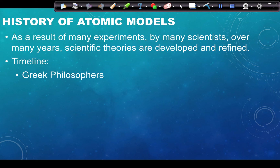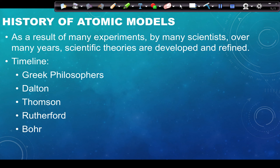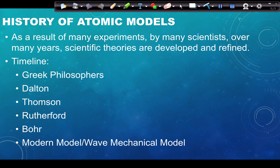For the timeline, the first people to discuss atoms were the Greek philosophers, who had the general idea that if you broke things down far enough you'd reach something indivisible, which they called 'atomos.' Then there was Dalton, who worked with gases and fixed proportions; J.J. Thomson, who discovered the electron; Rutherford's gold foil experiment; and finally Bohr, who came up with quantized electrons. The modern model and the wave mechanical model are synonyms and represent our current understanding.